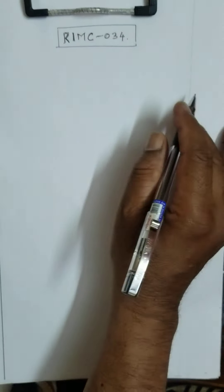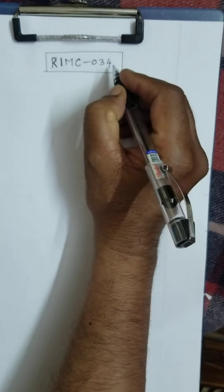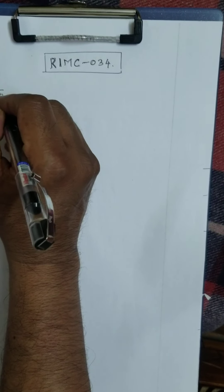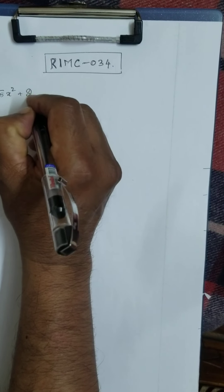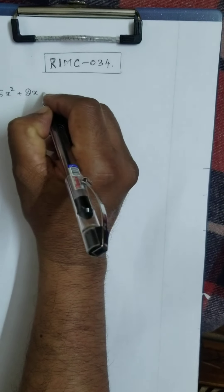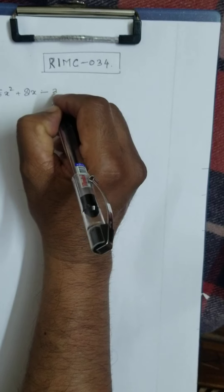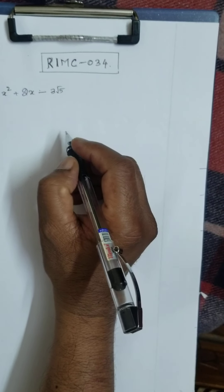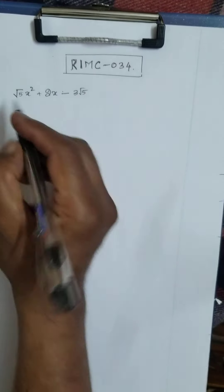See here, the factorization. I will continue the problem: √5·x² + 2x - 3√5. You have to factorize it. How to factorize it — that is important.